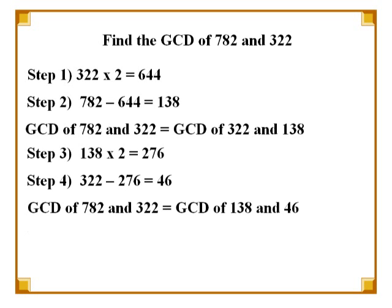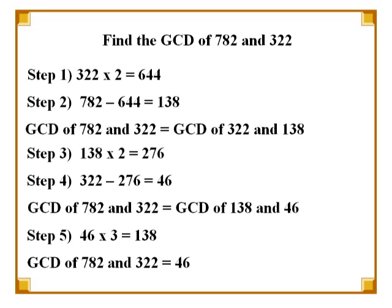Now we choose the lower number between 322 and 138, which is 138, and proceed to find the greatest common divisor of 46 and 138. We find that 46 times 3 is 138, so the difference between a multiple of 46 and 138 is 0. Therefore, the GCD of 46 and 138 is 46. This is also the greatest common divisor of 782 and 322.